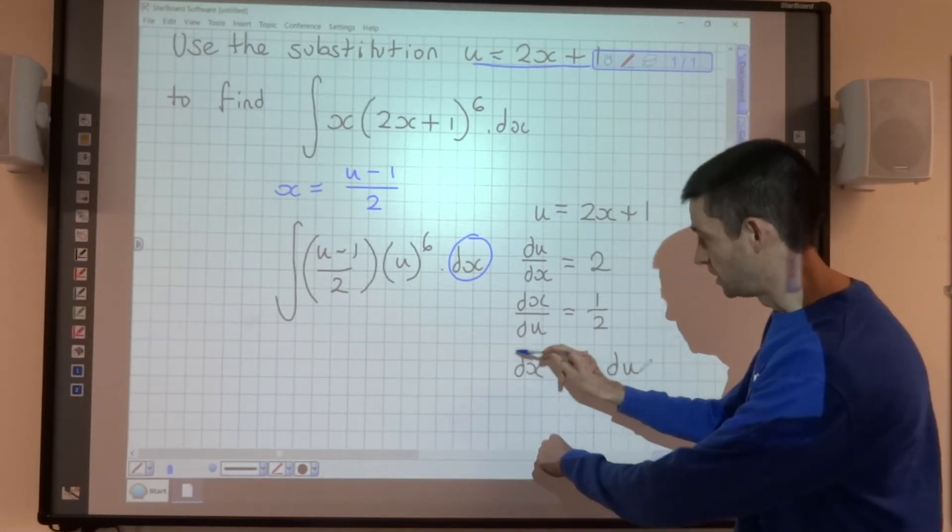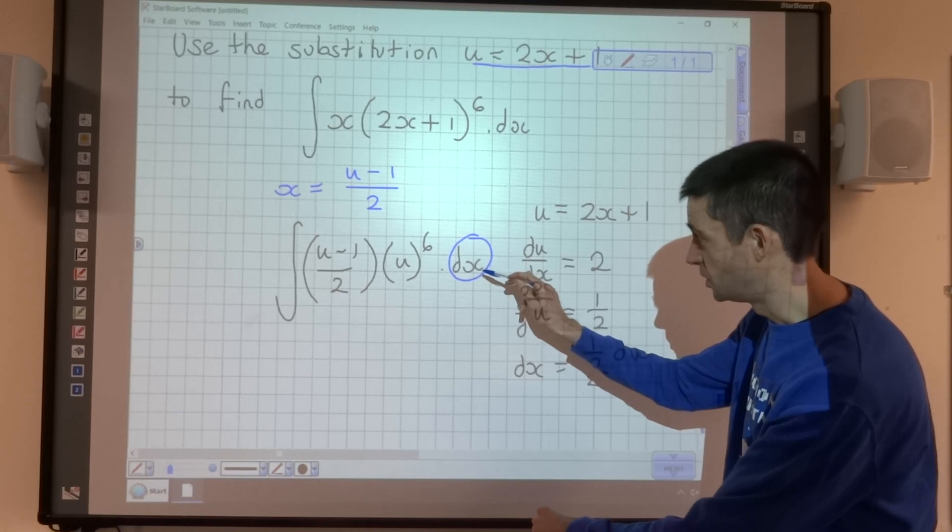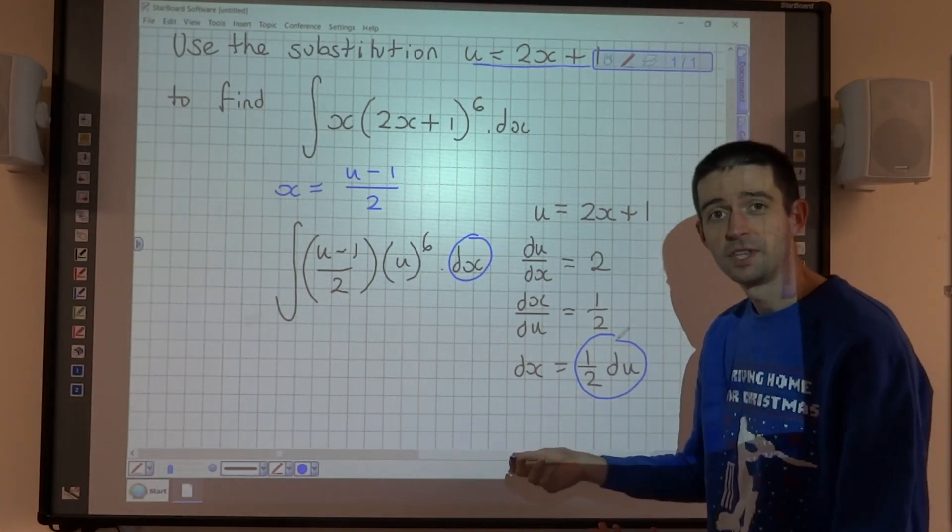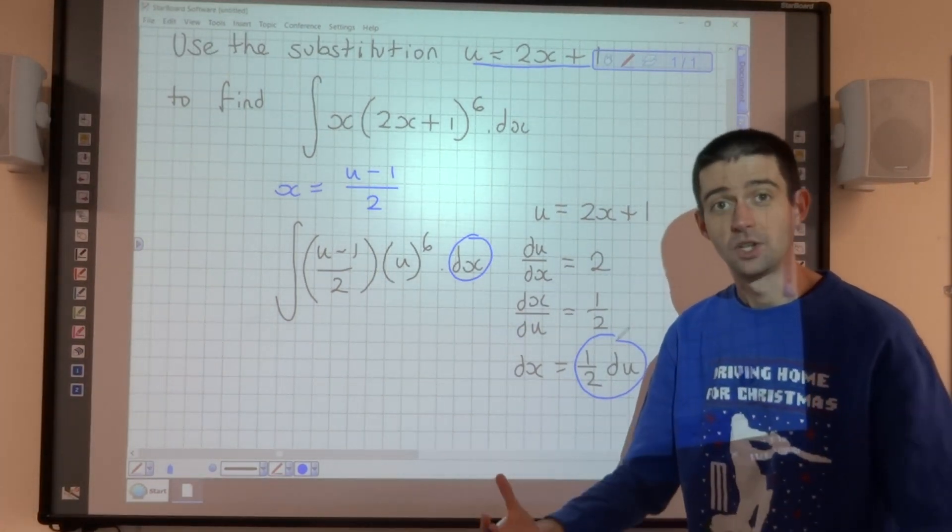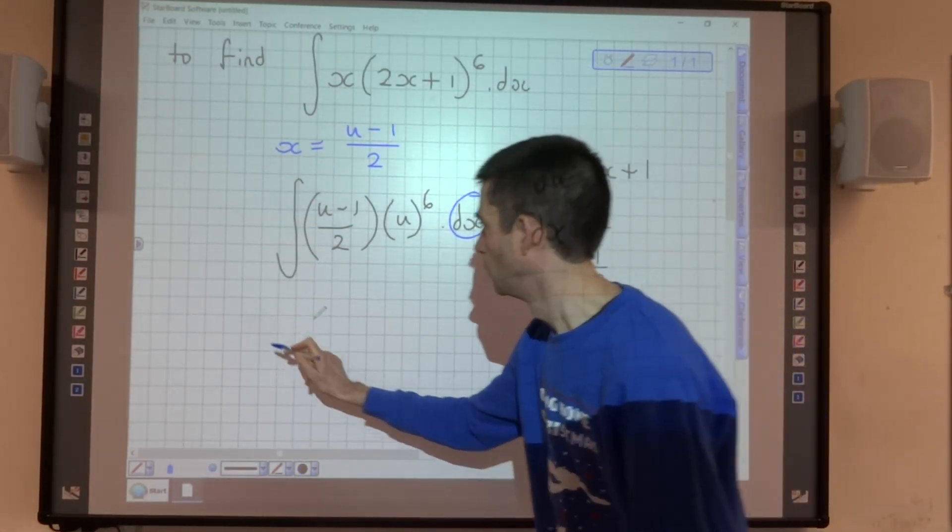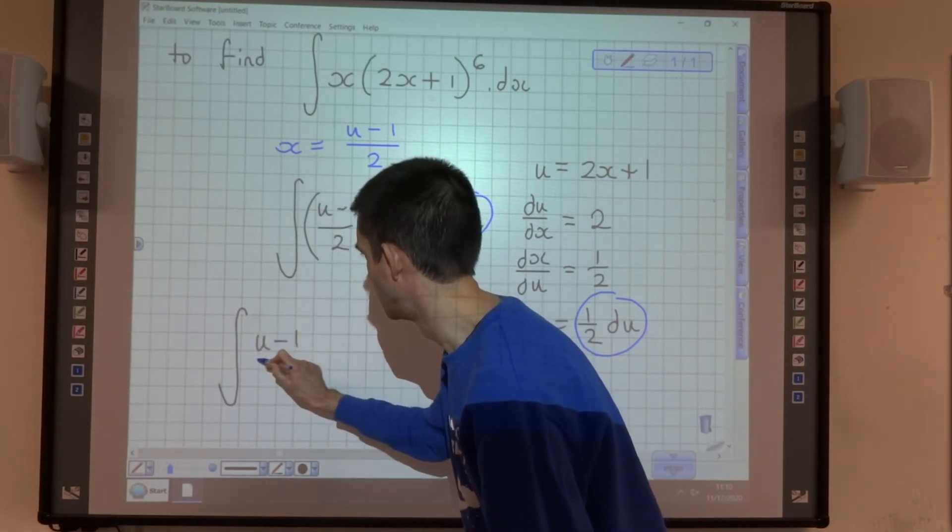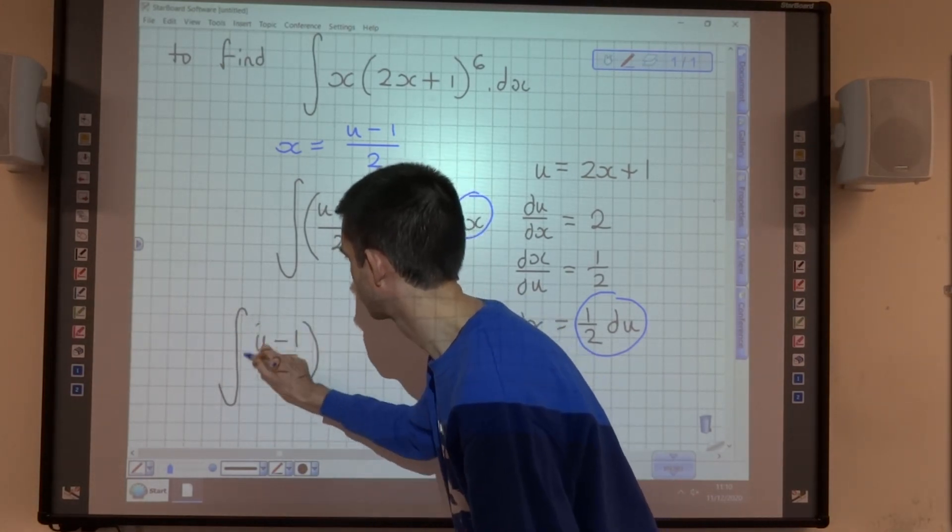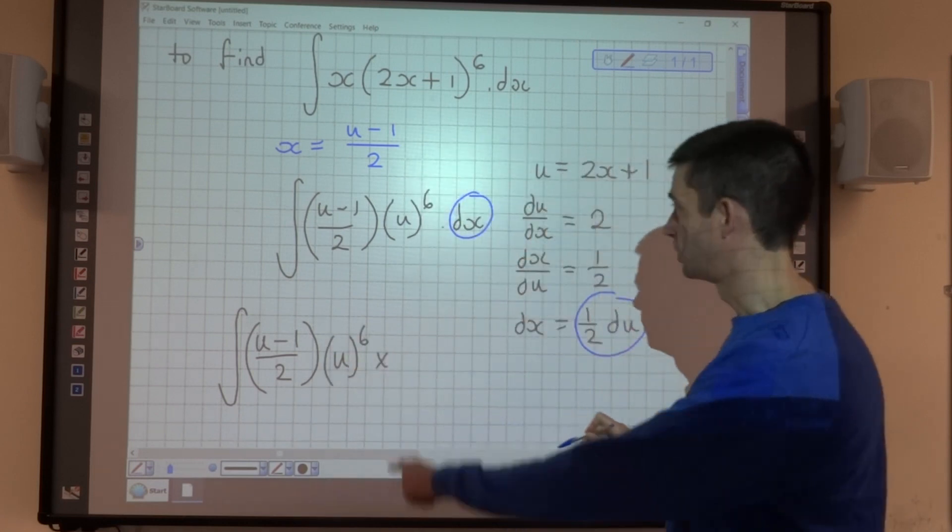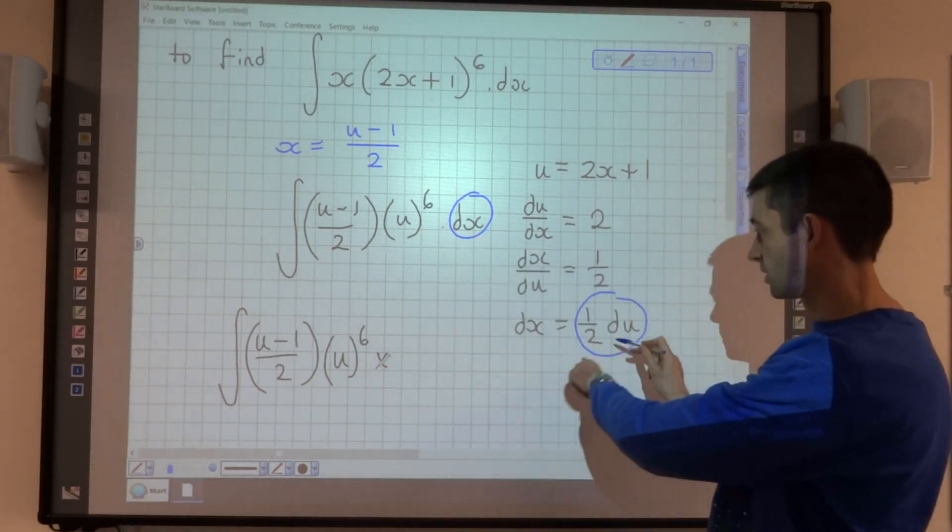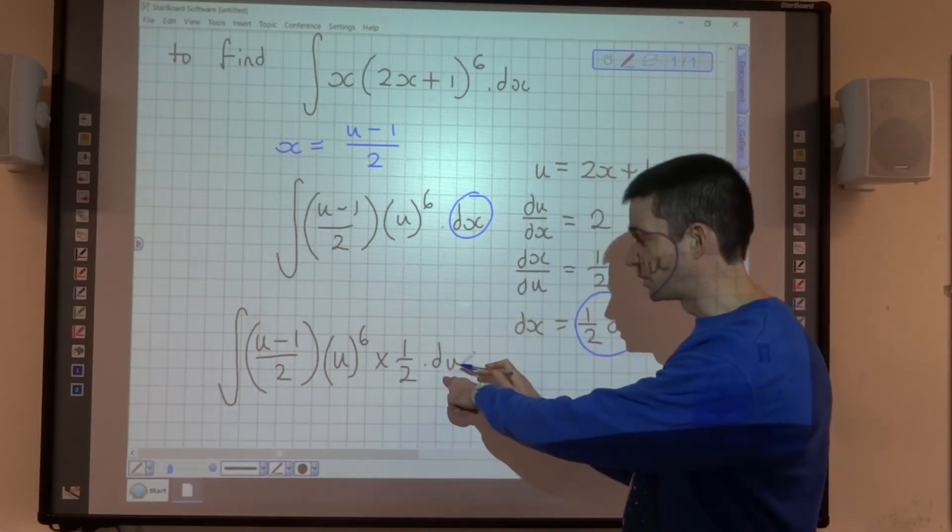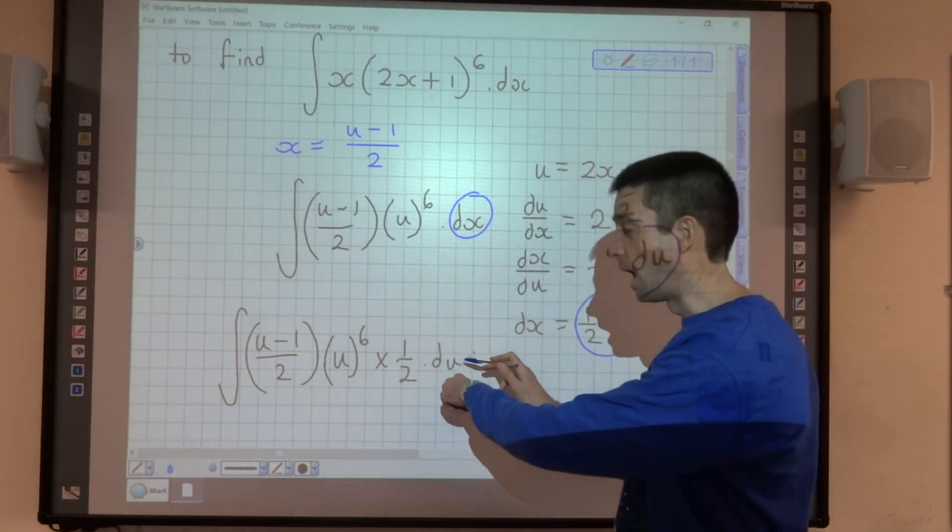Because what this now means is instead of writing dx in our integral here, we can write 1/2 du. And then we have everything in terms of u, and we can integrate in terms of u. So let's just think about what that's going to look like then. We're going to have the integral of (u minus 1)/2 multiplied by u to the power of 6, and then that's going to be multiplied by, instead of dx, 1/2 du. And this du now tells us that we're integrating in terms of u.